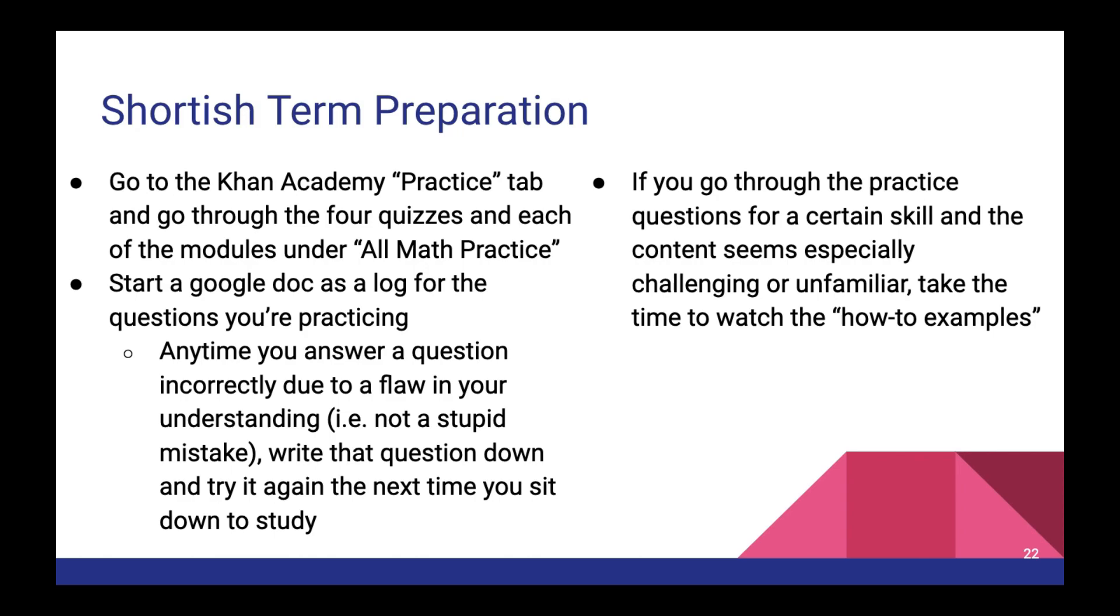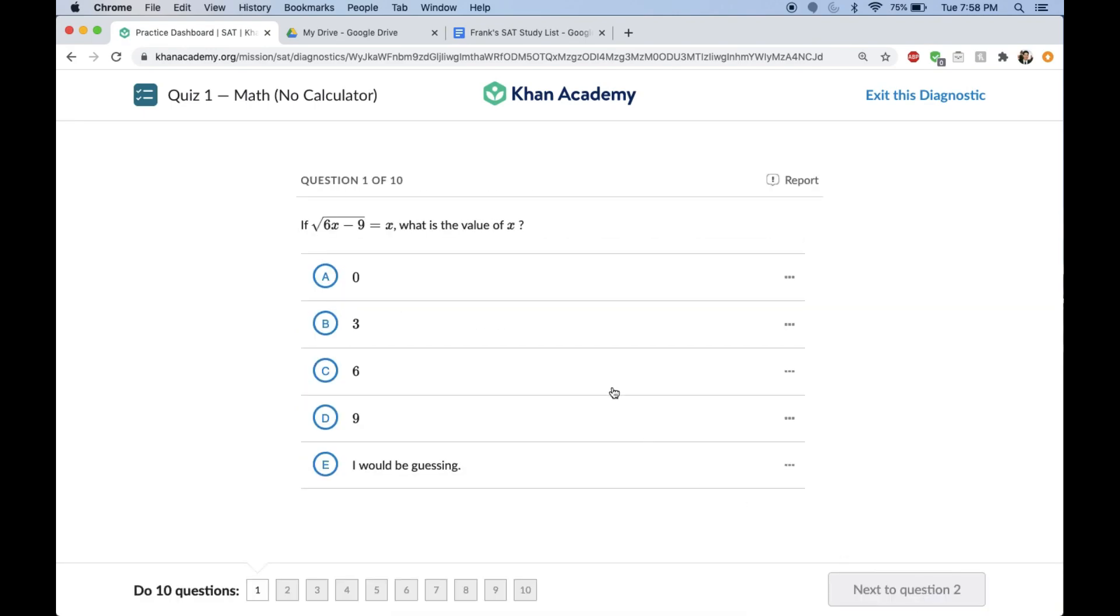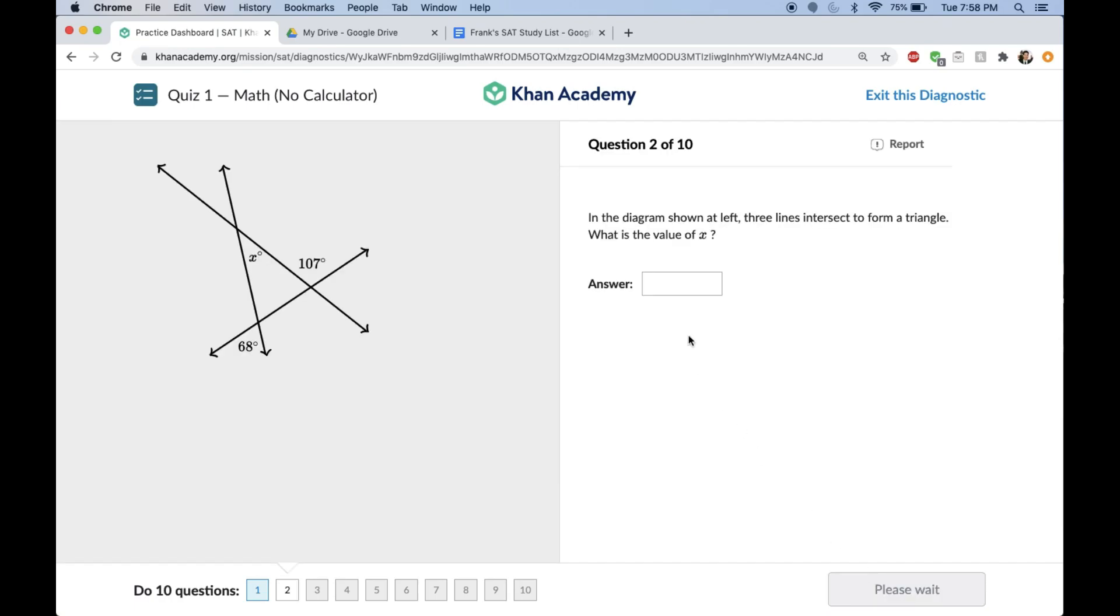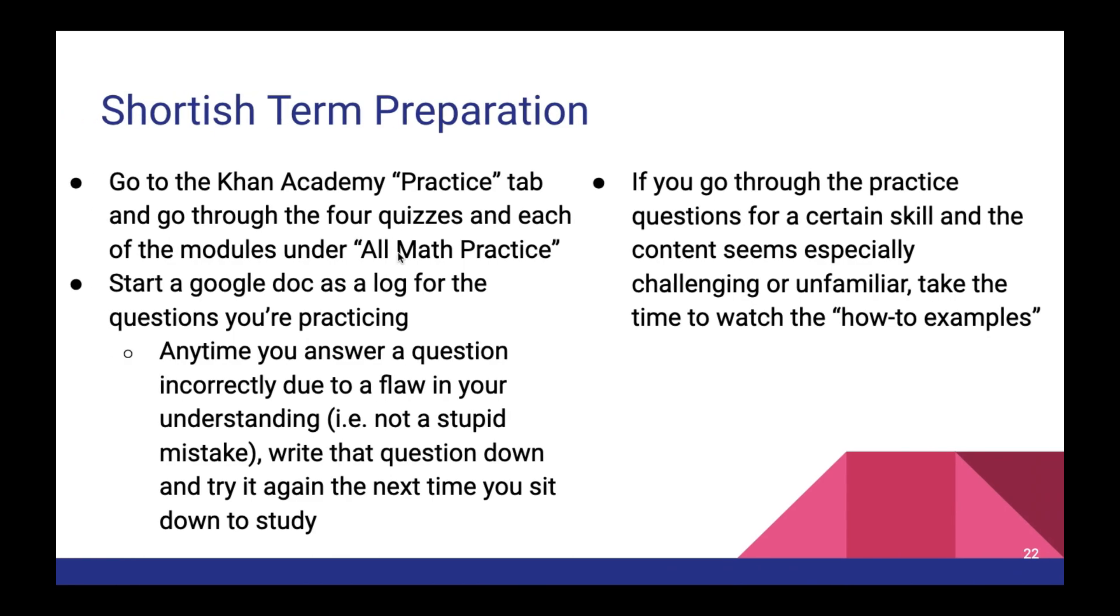So if you only have a couple days left, we'd suggest going to Khan Academy's practice tab and going through the four quizzes in each of their modules under all math practice. This is just what we did personally, but any of the free resources out there for SAT math are great. Regardless of what you choose, start a Google Doc as a log for all the questions that you're practicing. And any time you answer a question incorrectly due to a flaw in your understanding, aka not a stupid mistake, write the question down in that log. And then the next time you sit down to study the SAT, try the question again. And don't look at the answer, actually solve the question fully by hand. Much of the time, you'll feel like you understand a question just by reading over the answer. But promise, you will improve much more and learn much more if you actually take the time to fully solve the question and make certain that you can answer it.